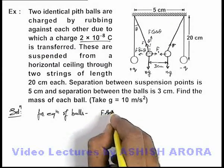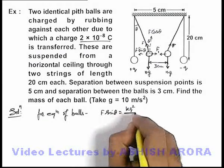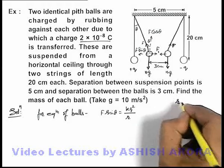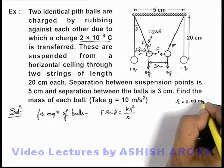F sin theta equals kq²/r². In this situation, we are given that the separation r is 0.03 meters, that is 3 centimeters.